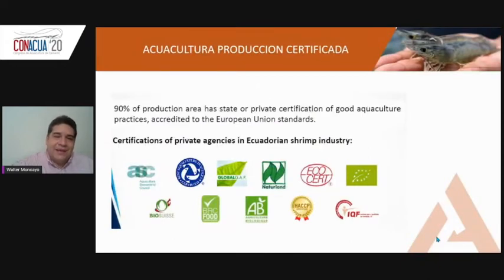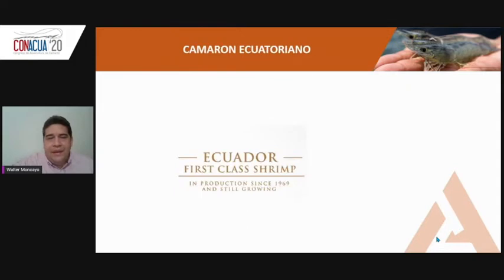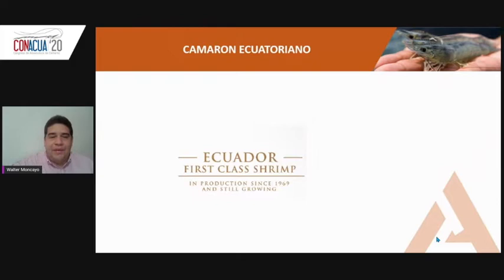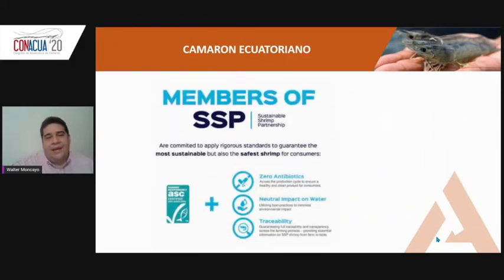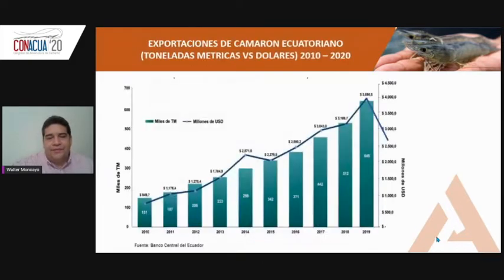In Ecuador, we work a lot on the concept of inocuity with several applications and different strategies. We have the ACC, Natula, COCERT, and institutions like the Chamber of Aquaculture that have worked to position Ecuadorian shrimp as the best shrimp in the world. The idea is to be free of antibiotics and maintain good production practices.